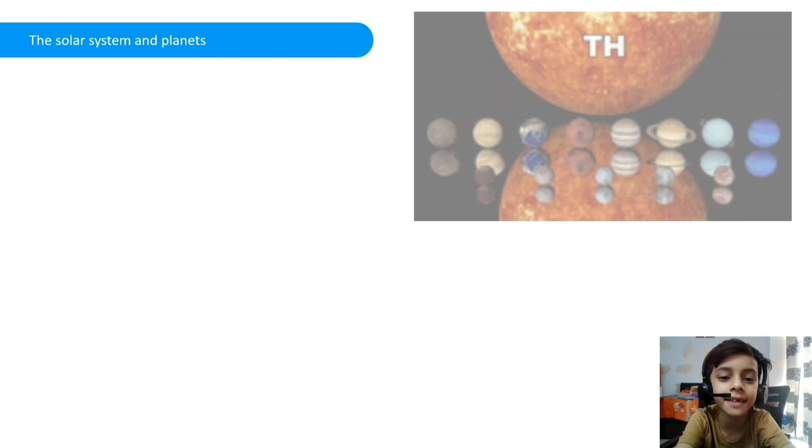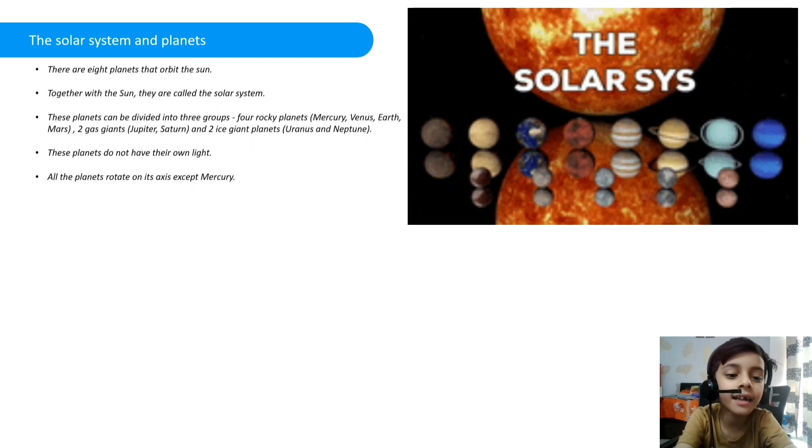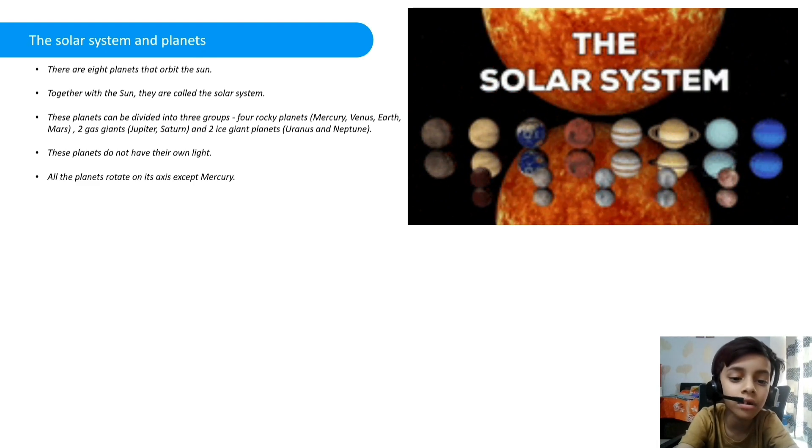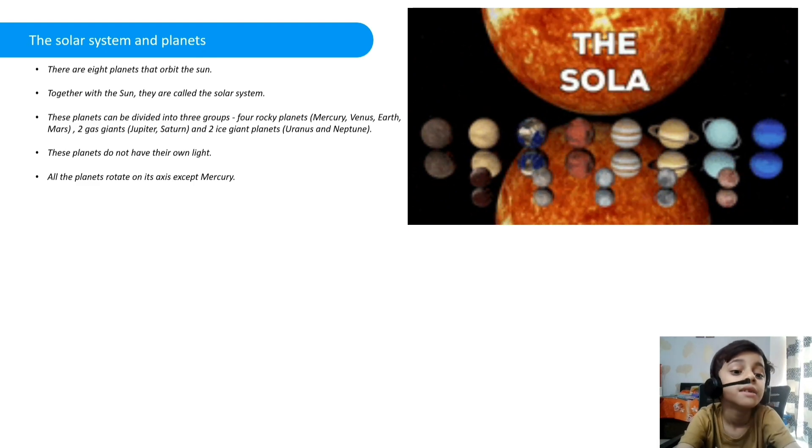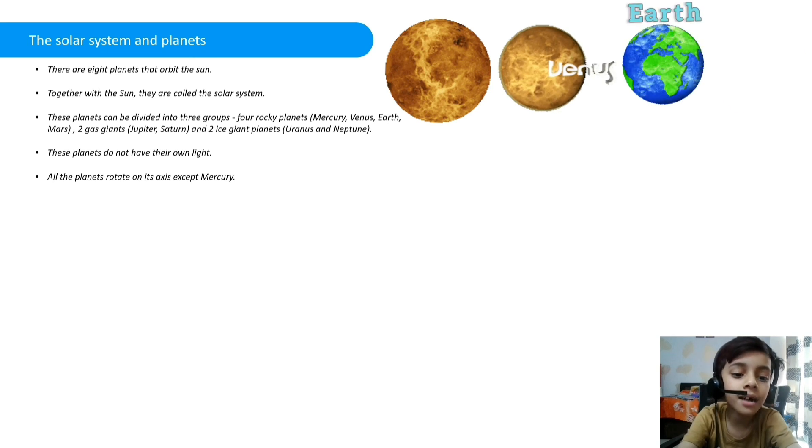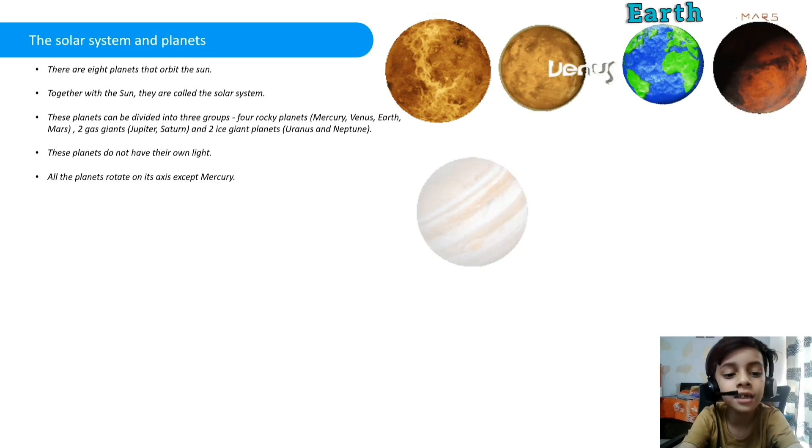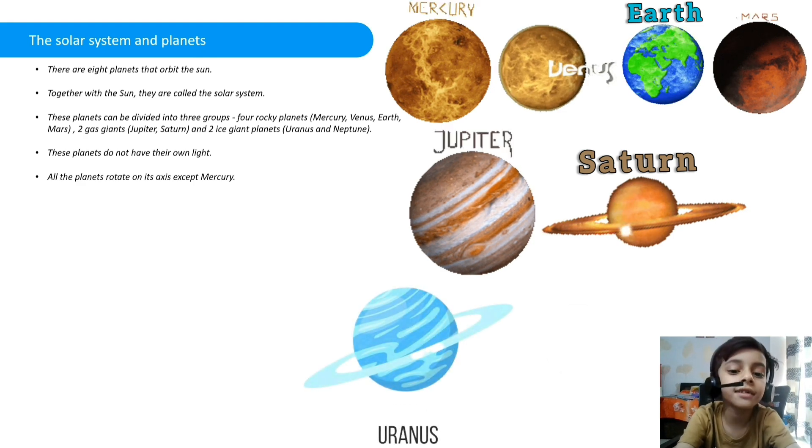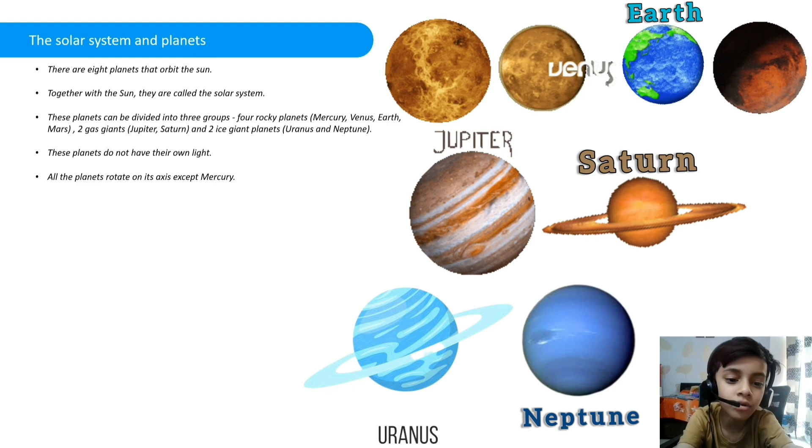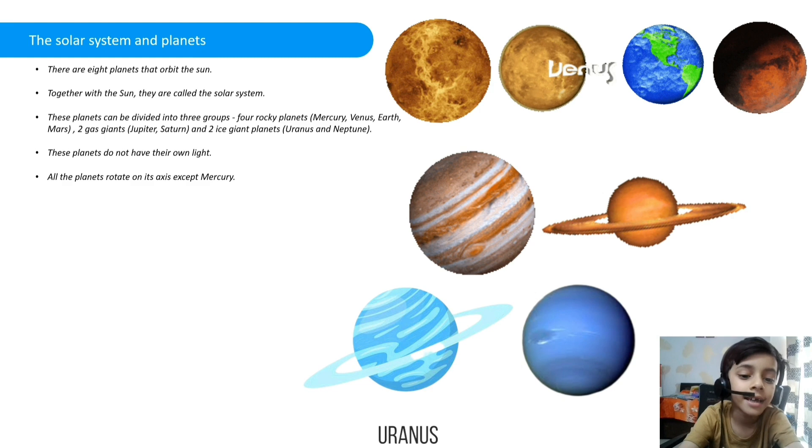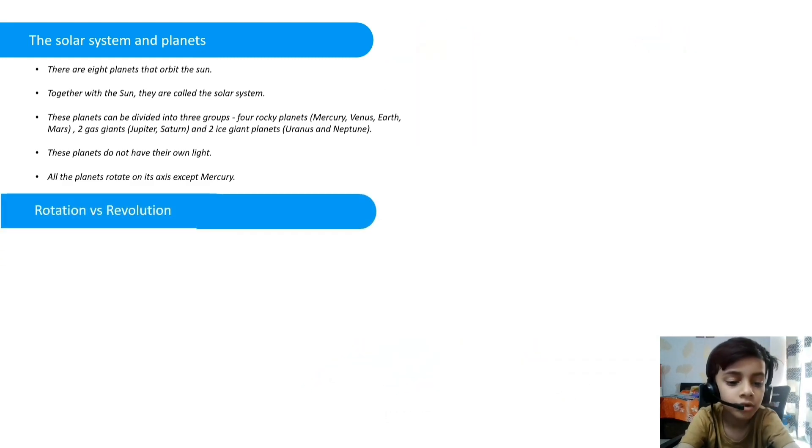The solar system and planets. There are 8 planets that orbit the sun. Together with the sun, they are called the solar system. These planets can be divided into 3 groups: 4 rocky planets like Mercury, Venus, Earth and Mars, 2 gas giants like Jupiter and Saturn, and 2 icy giants like Uranus and Neptune. These planets do not have their own light. All planets rotate on its axis except Mercury.